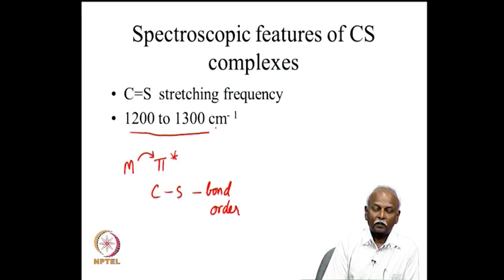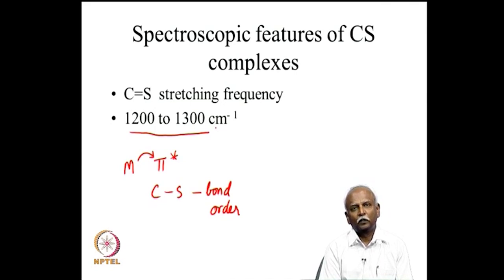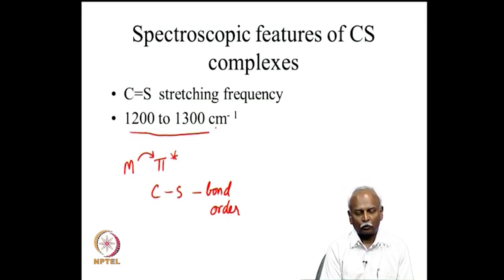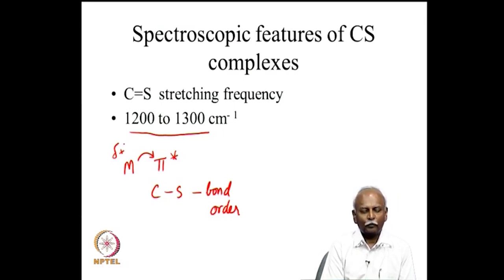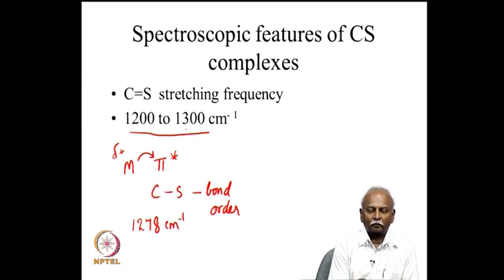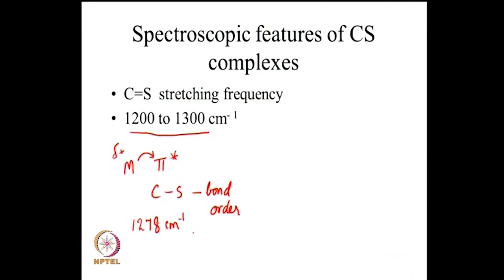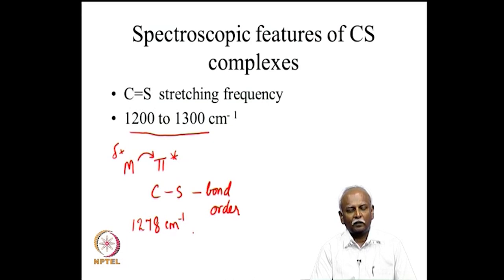In a few cases, the CS stretching frequency actually increases slightly above 1270 cm⁻¹, up to around 1300 cm⁻¹. This increase occurs only in positively charged systems or when there is a slight δ+ on the metal atom. When the metal carries a positive charge, back-donation is reduced, so the CS frequency is not lowered and may even be slightly higher. Both X-ray and spectroscopic evidence together clearly confirm a strong π bond between the metal and carbon monosulphide, which is weakened when electron density is transferred from the metal into CS.